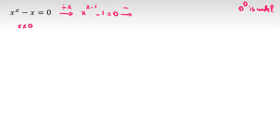Now if I add one to both sides, x to the x minus one equal to one. Now we want to see under what condition a to the power of something equal to one, so let's analyze this.